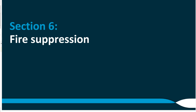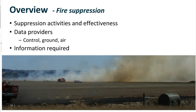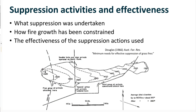Matt introduces the fire suppression section, which has three components: suppression activities and effectiveness, the data providers to consult, and the specific information required from each provider. Much of this data will come from interviewing people, which is covered in a later section of the course.